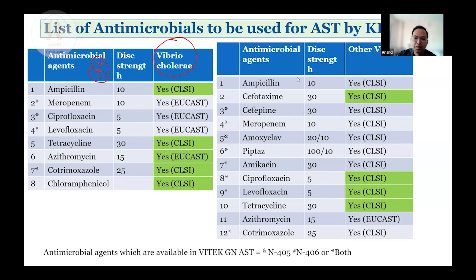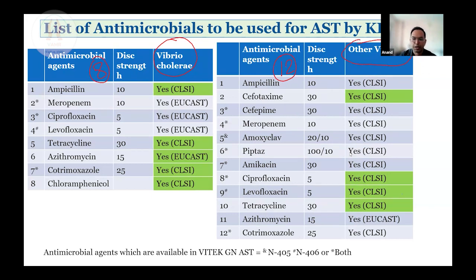On the right-hand side is a bigger table with all antimicrobials — this is the panel for non-cholera Vibrios. Interpretation will be based on CLSI or EUCAST guidelines. Those marked green — cefotaxime, ciprofloxacin, levofloxacin, and tetracycline — are indicated for primary testing. To generate an antibiogram, all labs must perform antibiotic susceptibility testing using all antimicrobials in the respective panels. The smaller table with 8 antimicrobials is for Vibrio cholerae and the bigger table with 12 is for non-cholera Vibrio species.